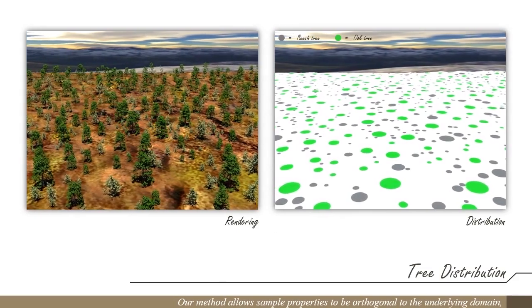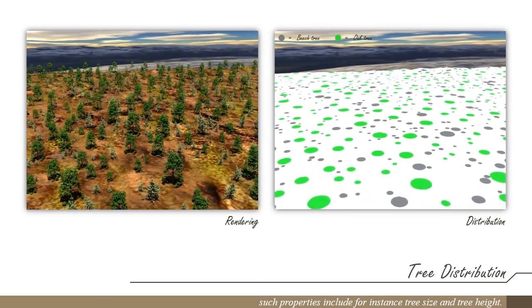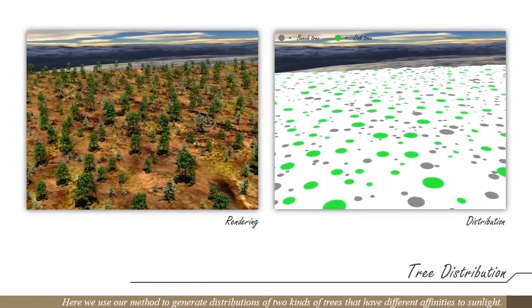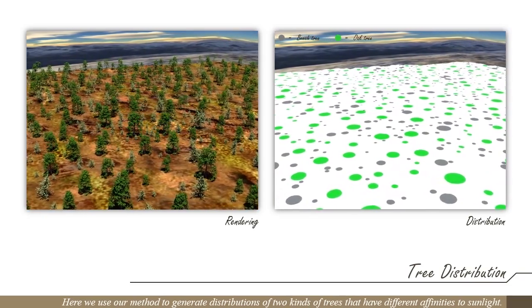Our method allows sample properties to be orthogonal to the underlying domain. Such properties include, for instance, tree size and tree height. Here we use our method to generate distributions of two kinds of trees that have different affinities to sunlight.